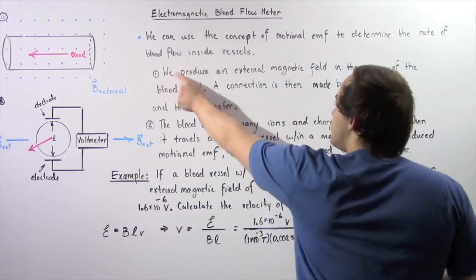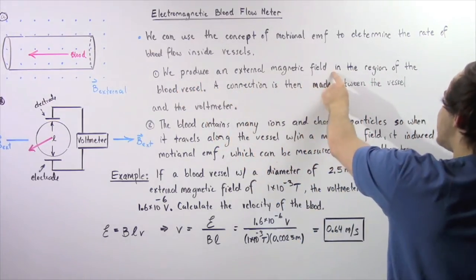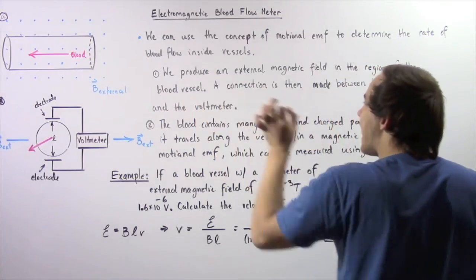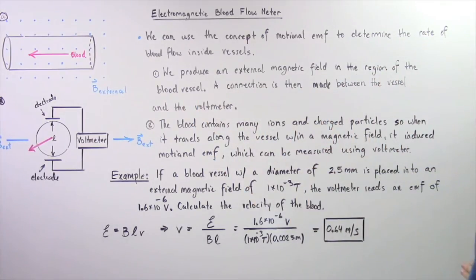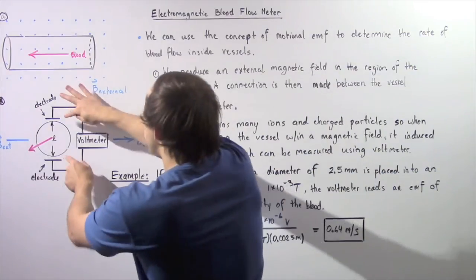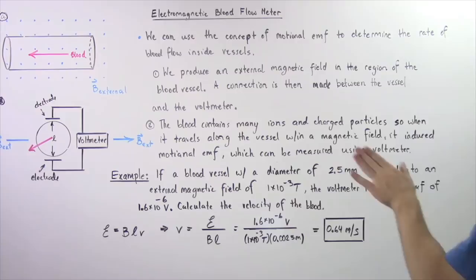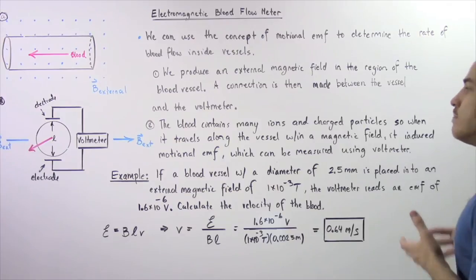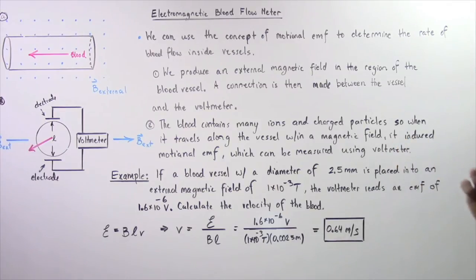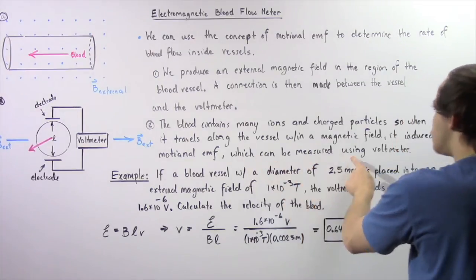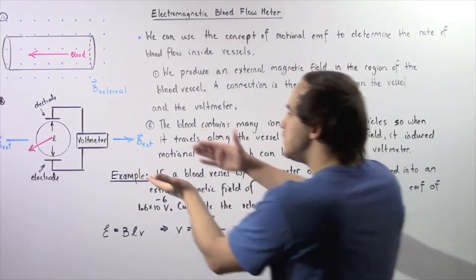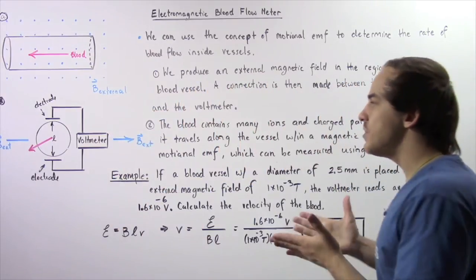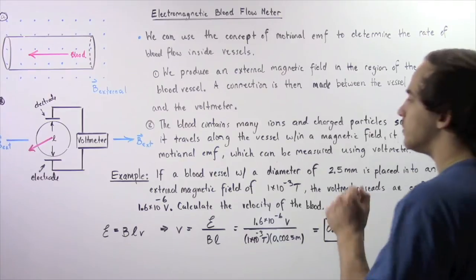To summarize: first, we produce an external magnetic field in the region of our blood vessel, and a connection is made between the blood vessel and the voltmeter using two electrodes. In step two, the blood contains many ions and charged particles, so when the blood flows along the vessel within a magnetic field, it acts as a moving conductor and induces a Motional EMF which can be measured using our voltmeter. Once we measure that induced EMF, we can calculate the velocity of our blood.